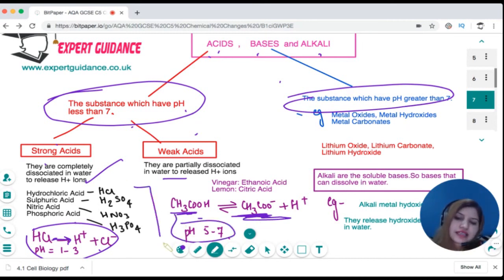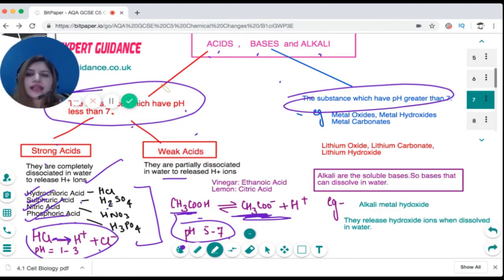These are the four acids you need to remember for your spec with their formulas: hydrochloric acid is HCl, sulfuric acid is H2SO4, nitric acid is HNO3, and phosphoric acid is H3PO4.